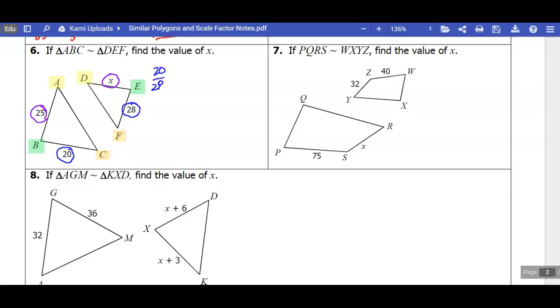And we don't need to reduce this, but I'm going to reduce it because it'll make my number smaller. So I'm going to divide by 4. So that's going to be 5 over 7. And this is going to be my scale factor.